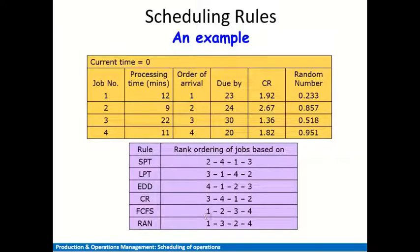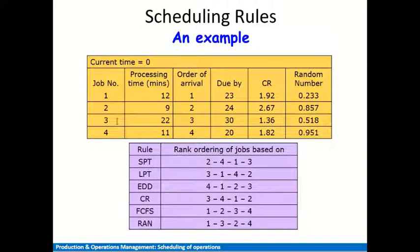For the First Come First Serve method, we process jobs in the sequence they arrive. The arrival sequence is job one first, then job two, then three, then four. So the FCFS sequence is simply: 1, 2, 3, 4.